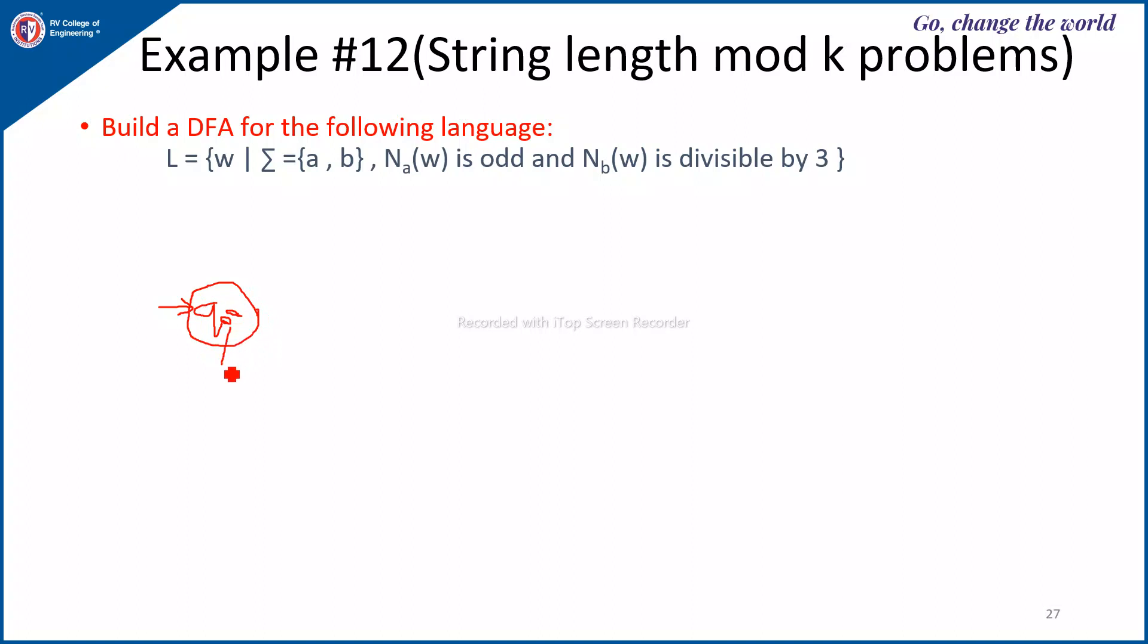First represent A's modulo 2 and the second index represent B's modulo 3. So if first A appears, then it goes to the state Q1, 0. If one more A appears, then A's modulo will be 0 and B's is also 0.